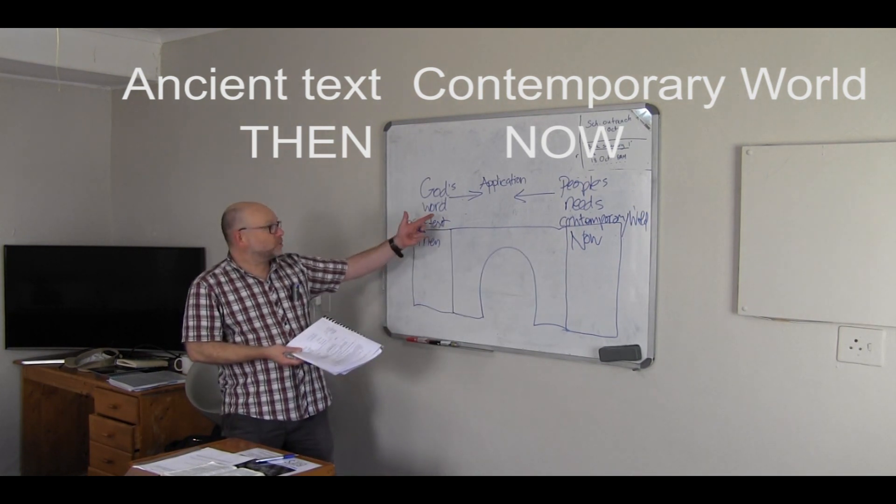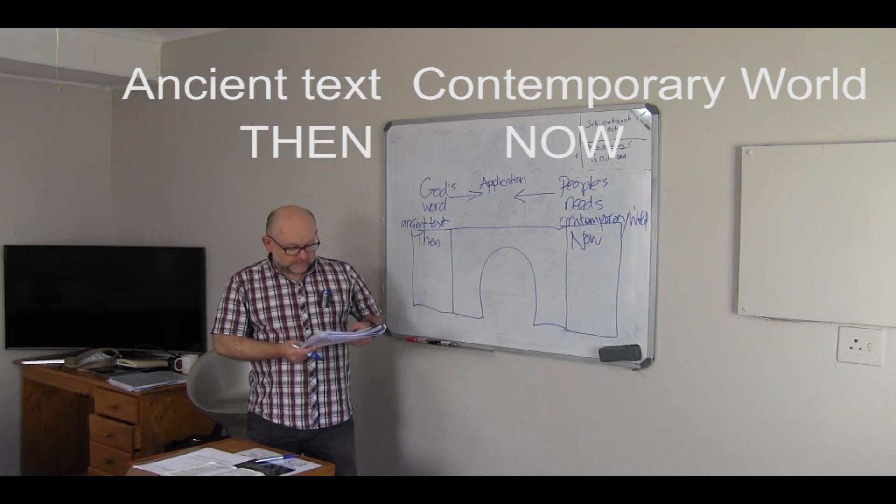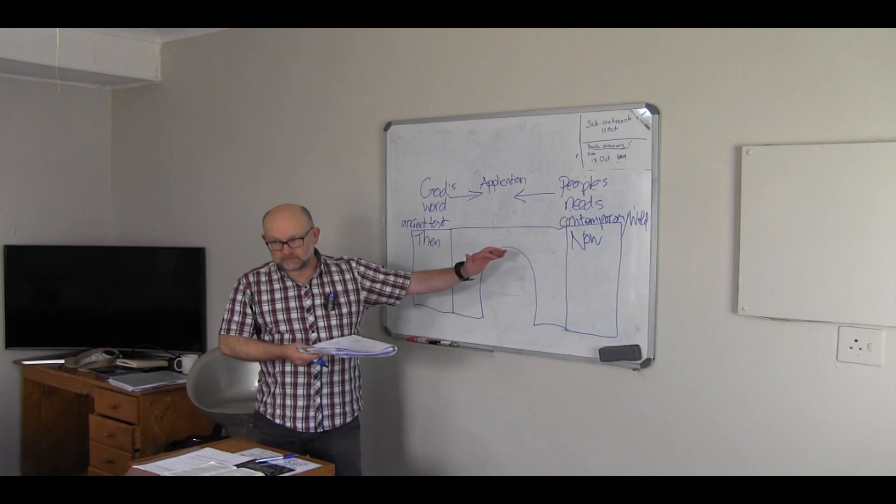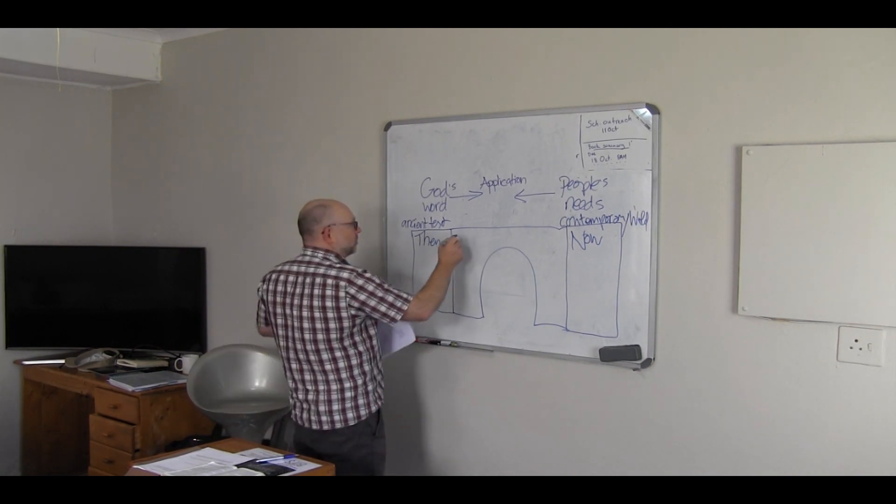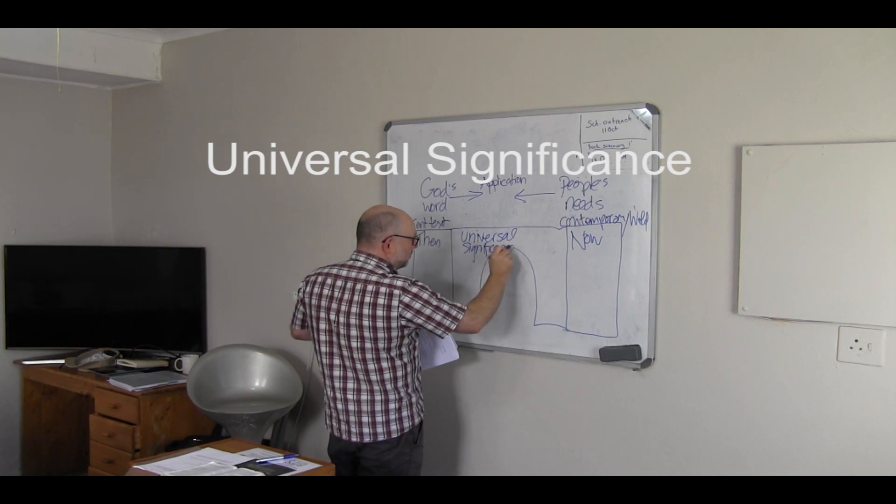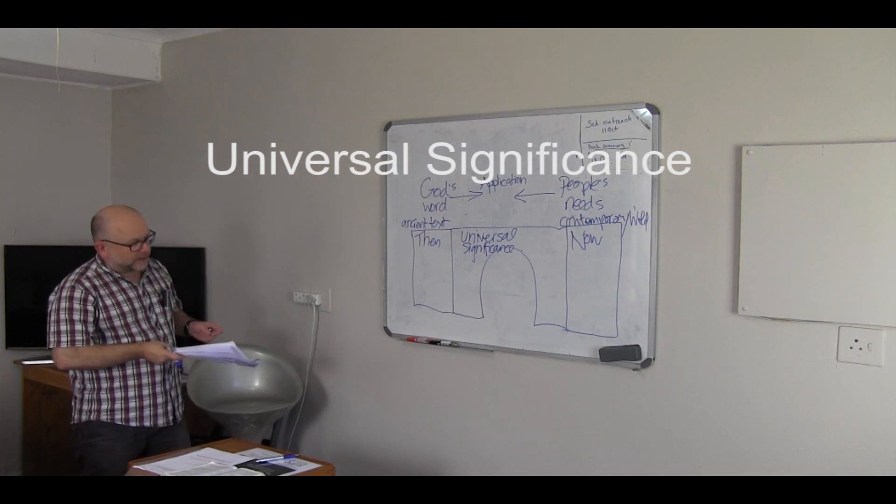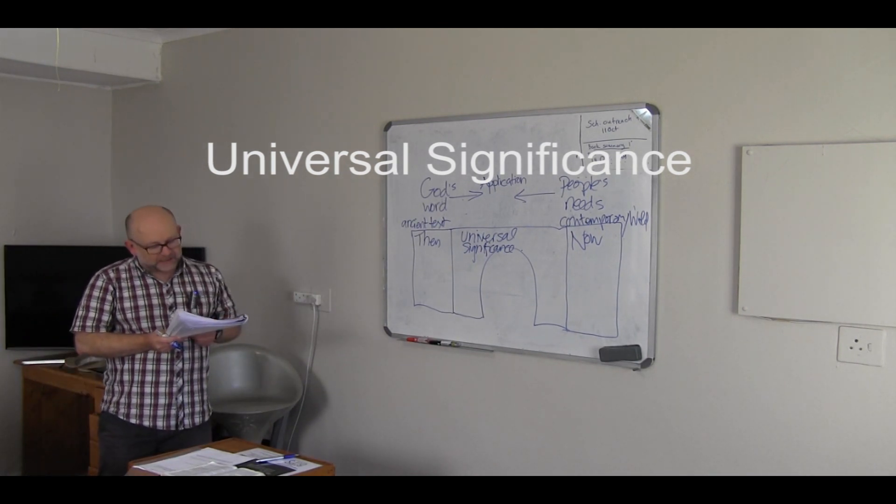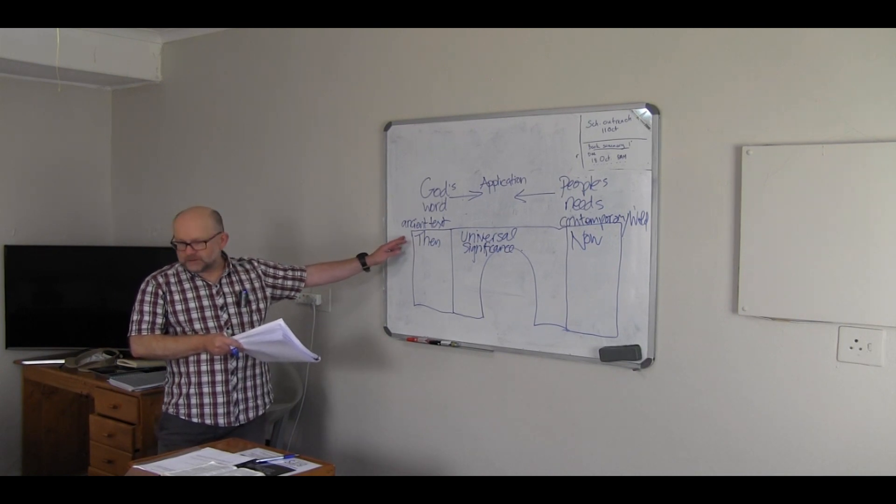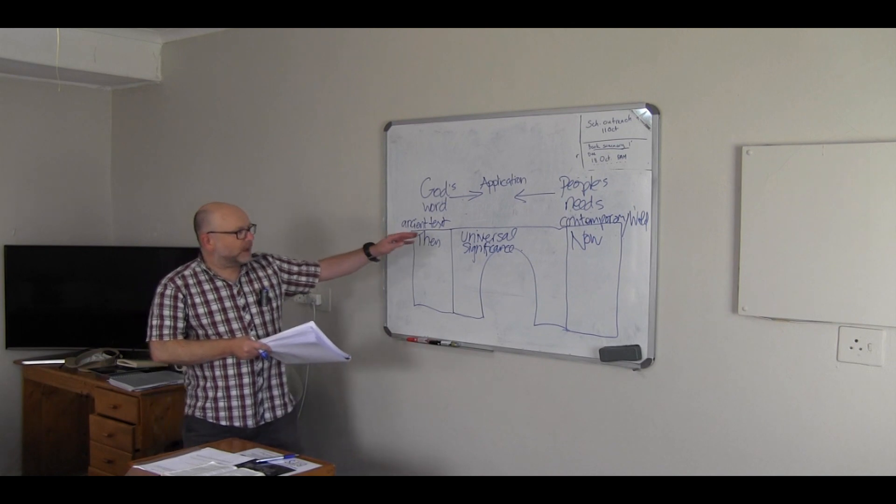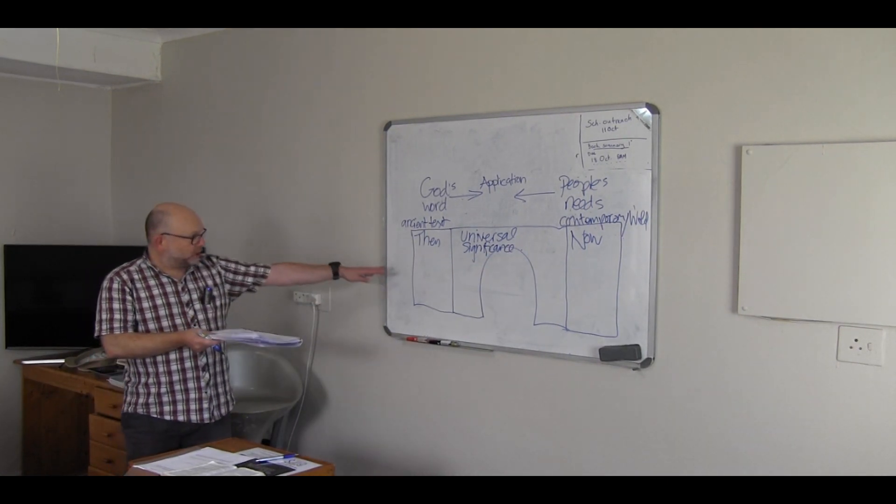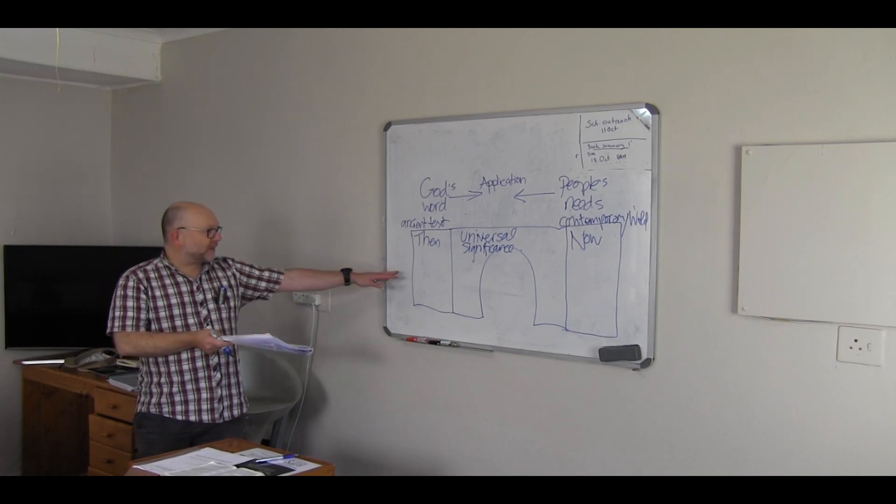This is the now. This is the world, the contemporary world, the world of the now, 2016. And what we're trying to do is connect the ancient text to the contemporary world. God's word, people's need together in application. And we need to fuse these two worlds together. Don't underestimate the task here. The Bible text is the word, God's word, past revelation, then. And that's the world of interpretation.